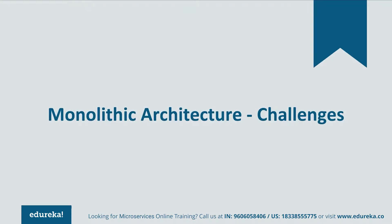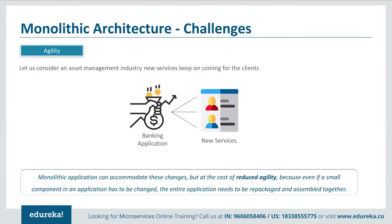Let's understand these challenges one by one. The first challenge is agility. Consider an asset management industry where different clients come with different investments and have to be offered different services. If any new services had to be given to new clients or any new changes had to be made, could a monolithic application accommodate these changes? It could, but at the cost of reduced agility. This happened because even if a small component in an application had to be changed, the entire application had to be repackaged together.